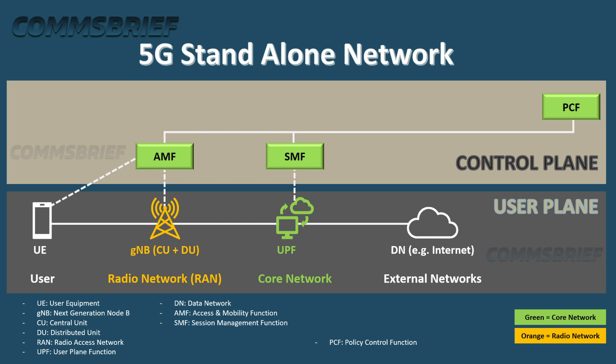The network architecture can be seen on at least two levels: the user plane and the control plane. The control plane carries control functions such as signaling traffic, and the user plane carries user data — for example, the content of a YouTube video you may be watching on your phone. If you focus on the green boxes and components on screen representing the core network, you may note that a mobile phone is connected to the base station gNB, linked to AMF and UPF. So AMF and UPF are part of the core network, whereas gNB is the radio network.